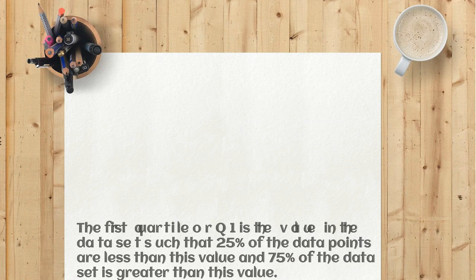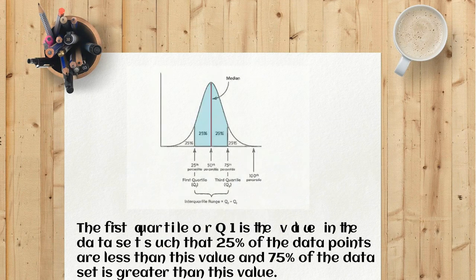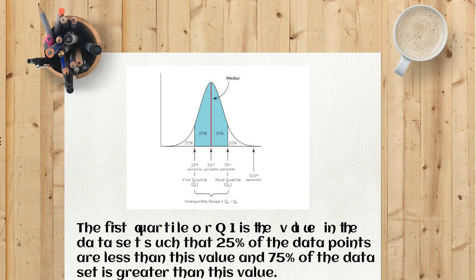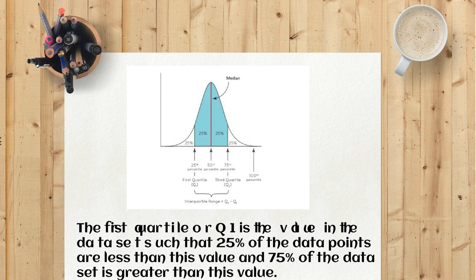The first quartile, or Q1, is the value in the data set such that 25 percent of the data points are less than this value and 75 percent of the data set is greater than this value.